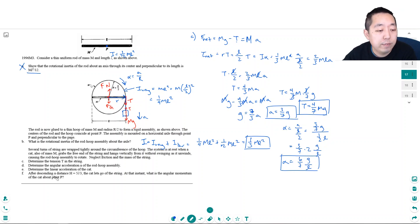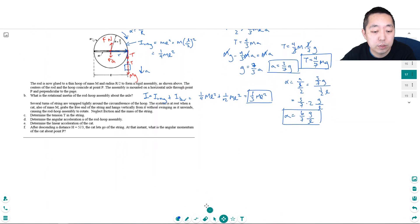After descending a distance 5L over 3, the cat lets go of the string. At that instant, what is the angular momentum of the cat about point P? So it looks like this is definitely a trickier problem. So for part D, let's draw a picture here. The cat has gone down a distance of 5/3 L. Let's do the 5/3 L. And the cat has now let go, right at this moment.